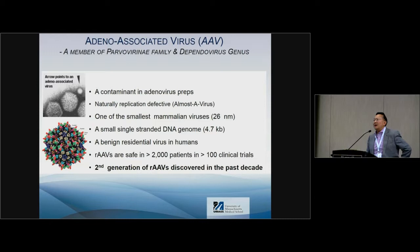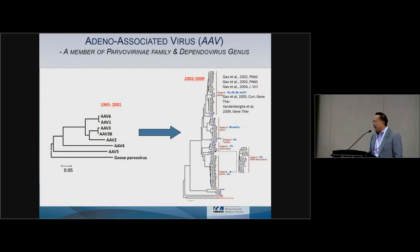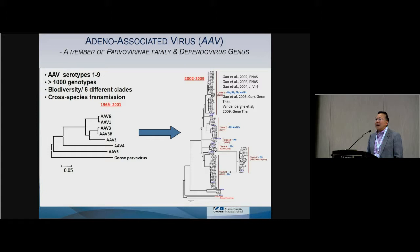AAV is a benign residential virus in humans, and many of us carry it in one way or another. AAV has been used in more than 2,000 patients across 130 clinical trials. In the past two decades, we developed second-generation primate-derived AAVs, which have become critical tools for current in vivo gene therapy. When I was at Jim Wilson's lab, we had up to about 100 natural variants; now in our lab at UMass we probably have more than 1,000.